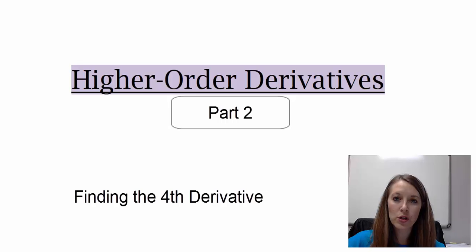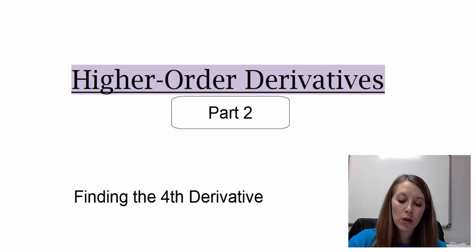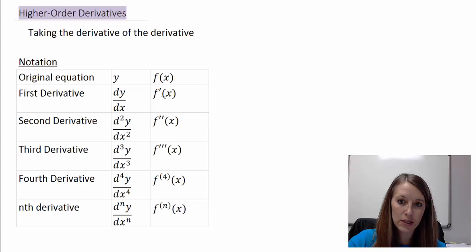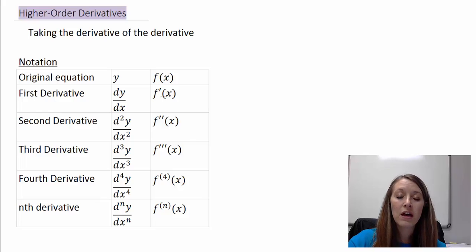We are working on higher order derivatives. In the last video, we did a couple of examples of finding the second derivative. There will be some problems where you have to go beyond that. The notation is pretty consistent throughout, and I recommend that you stay on top of it. Whenever you take another derivative, use the new derivative notation. If you're just simplifying the derivative, then keep that notation as it was.